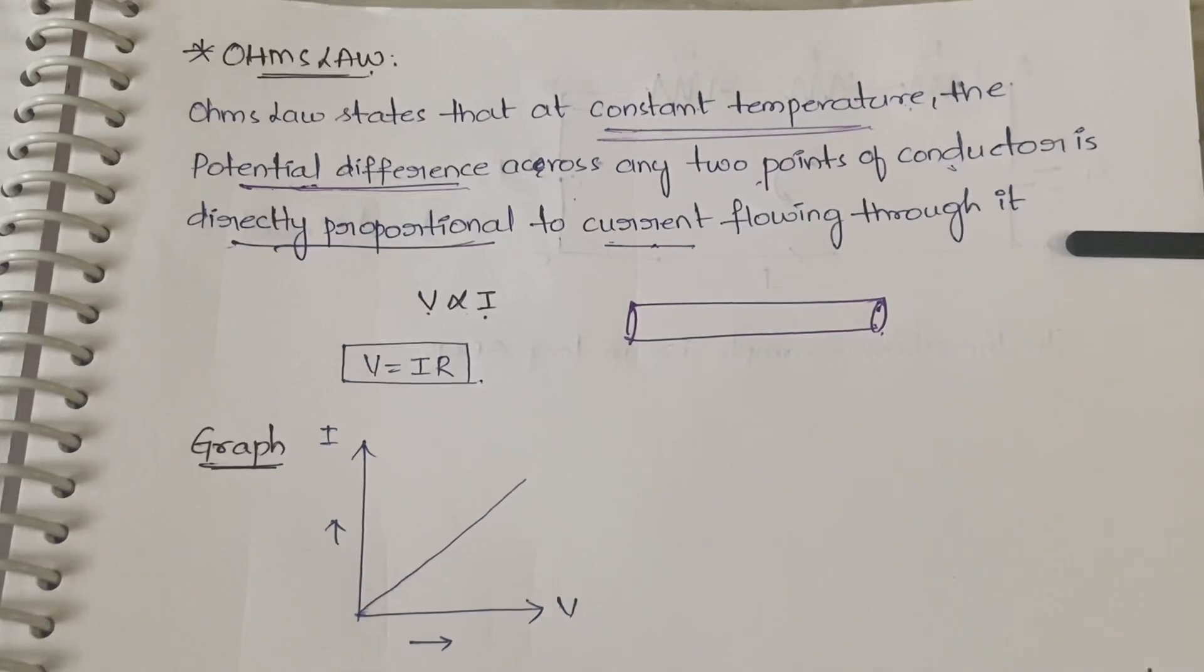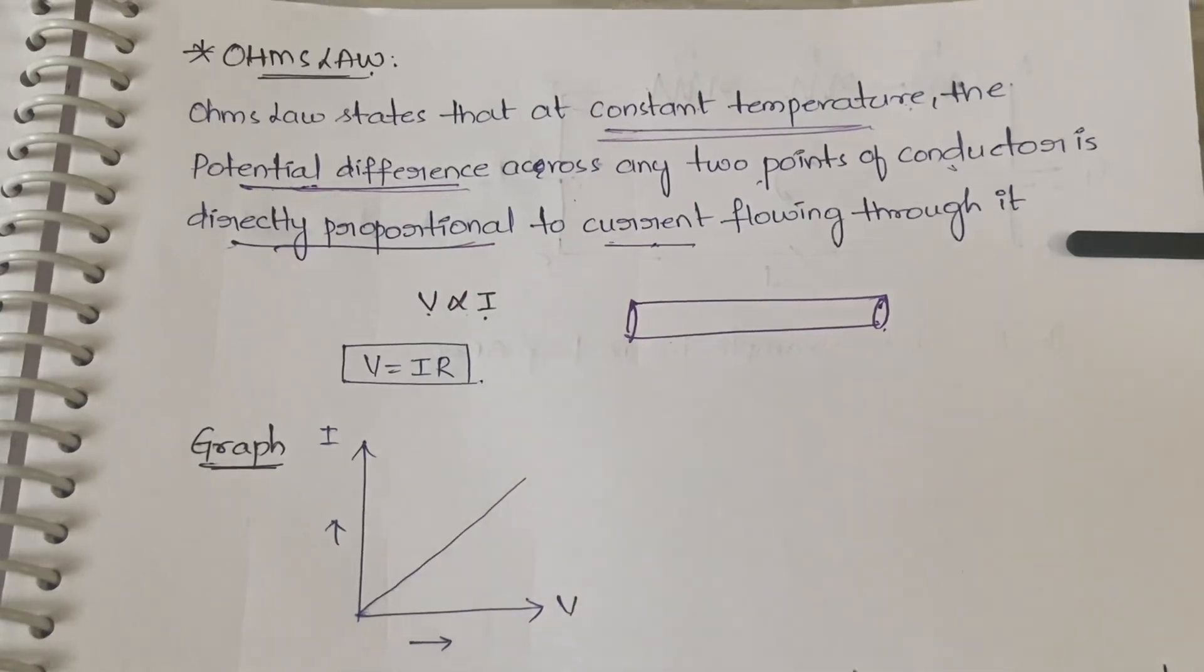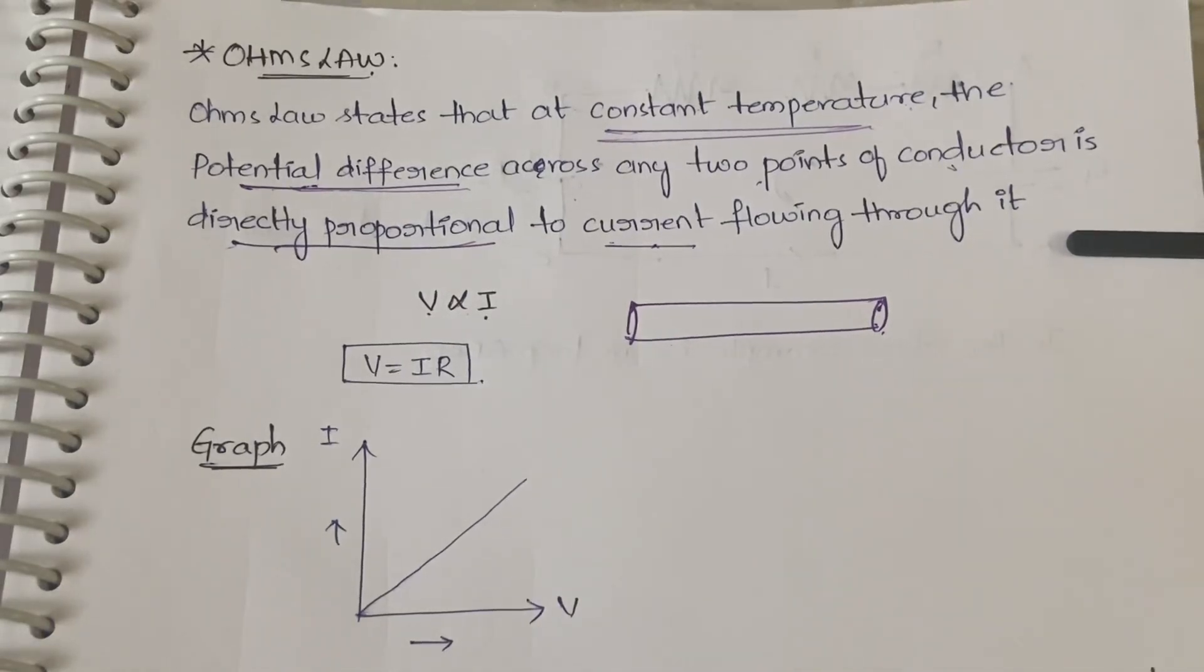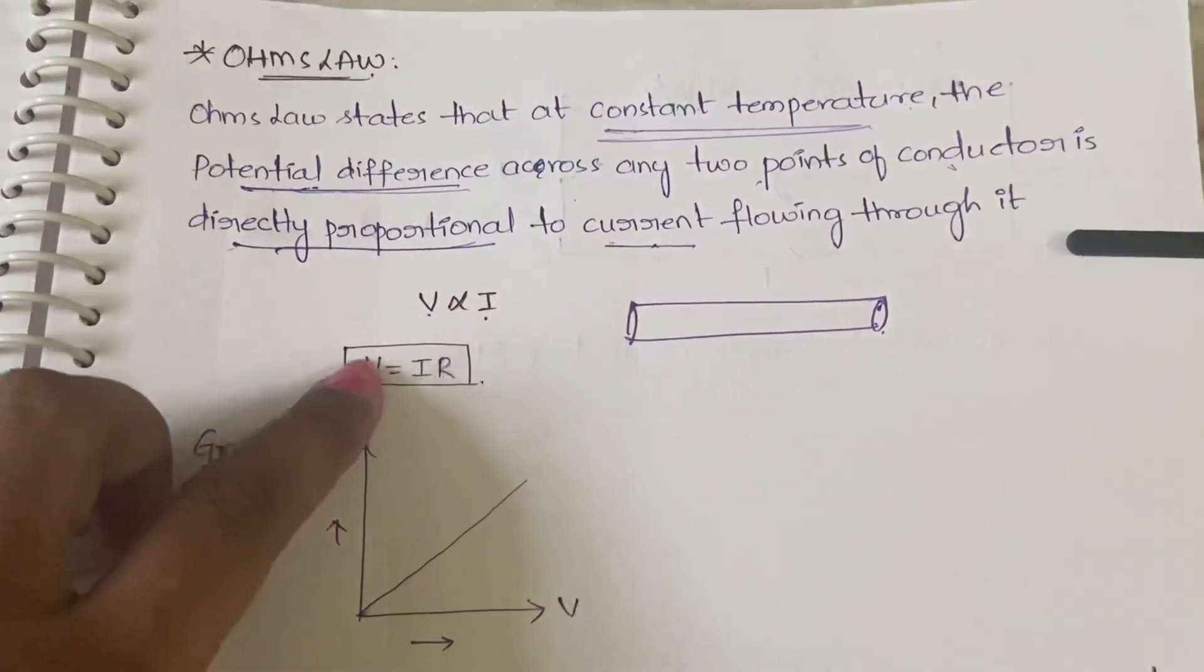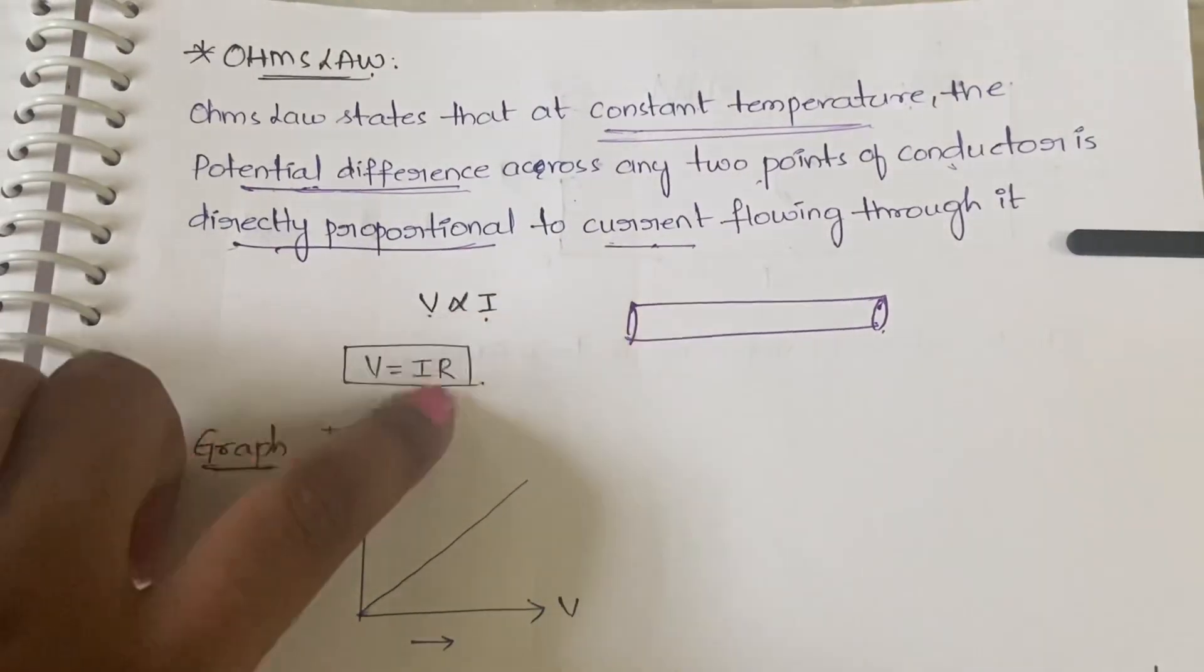Usually in math, when we learn inverse and direct proportionals, when we remove the proportionality symbol we get a constant, right? Here also we have removed that proportionality constant and made it equal to, and we are getting a constant which is nothing but R, the resistance.